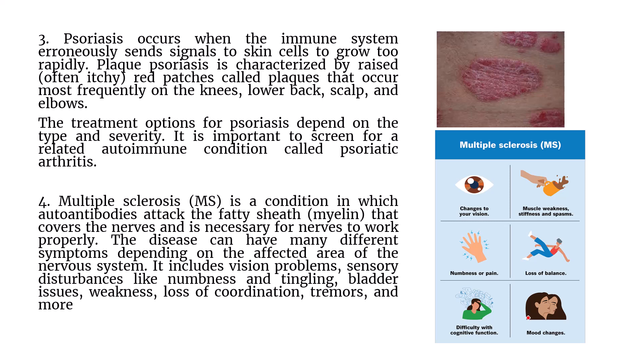Psoriasis occurs when the immune system sends signals to skin cells to grow too rapidly, causing excess cell division. Plaque psoriasis is characterized by raised red patches called plaques, which occur most frequently on the knee, lower back, scalp, and elbows. Treatment depends on the severity and the type of cells causing psoriasis, and it is important to screen for a related autoimmune condition — psoriatic arthritis.